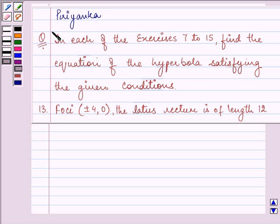Hello and how are you all today? My name is Priyanka and I shall be helping you with the following question. It says in each of the exercises 7 to 15, find the equation of the hyperbola satisfying the given condition. The foci is given to us as (±4, 0) and the latus rectum is of length 12.